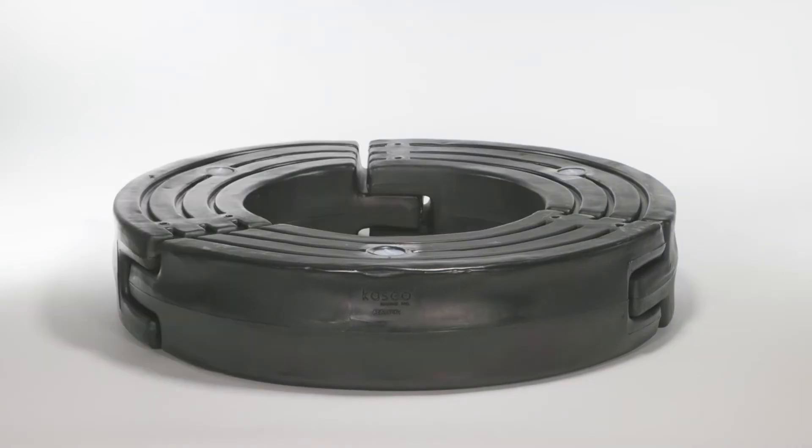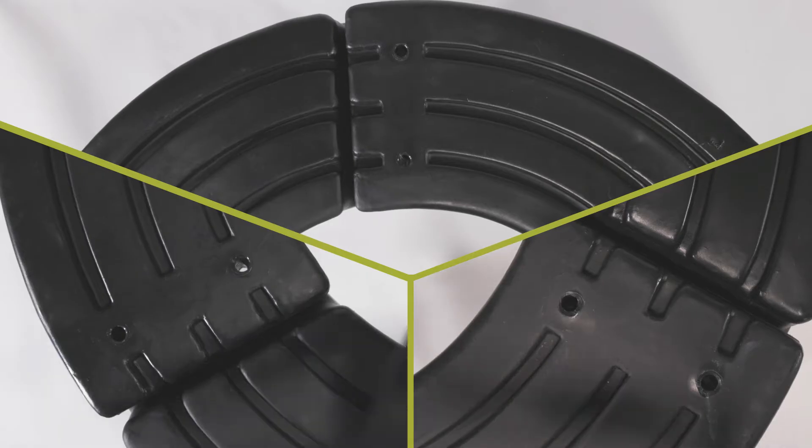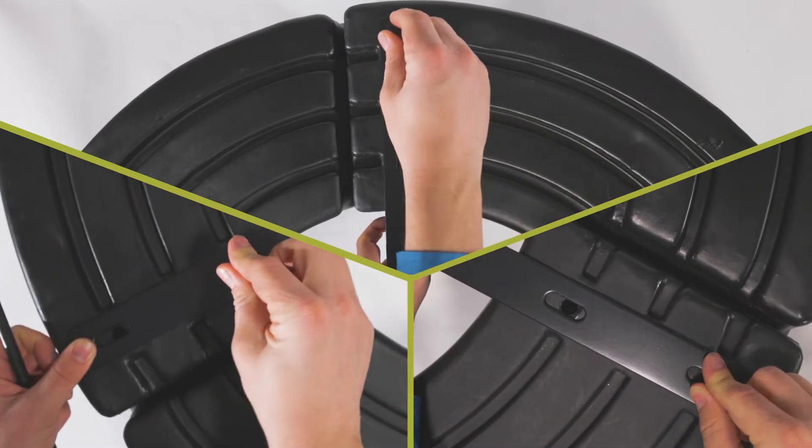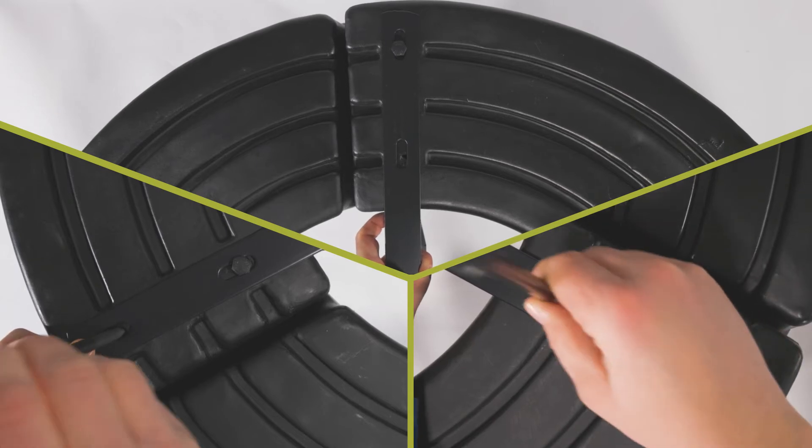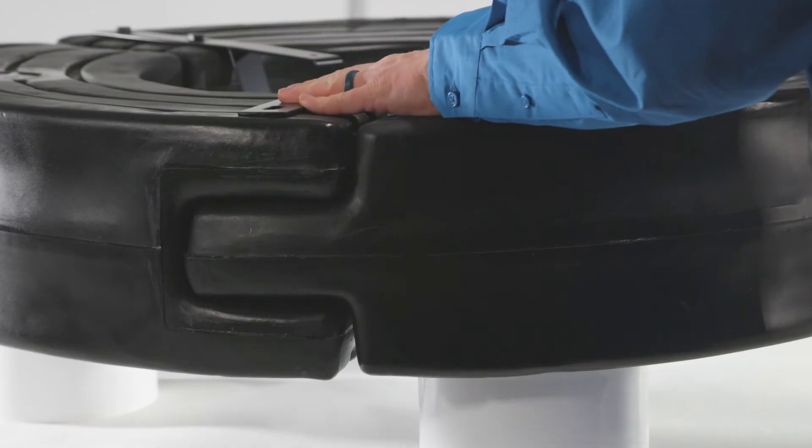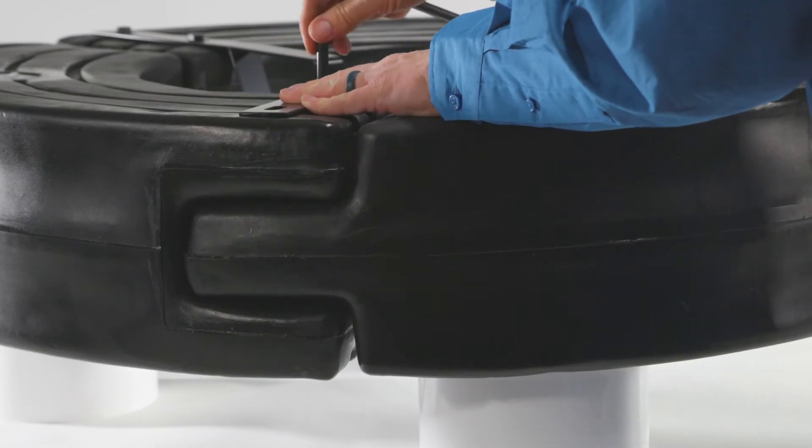Find a large table or workspace to assemble the float. Start by arranging the three float sections in a circular pattern. Grab a top float bracket and align the bolt holes in the bracket with the bolt holes in the two adjoined float sections. Now insert two 9.5 inch screws through the aligned brackets and the float holes for each float joint.